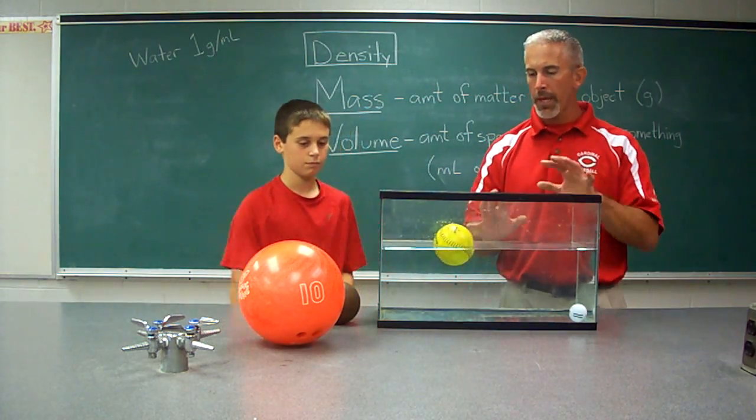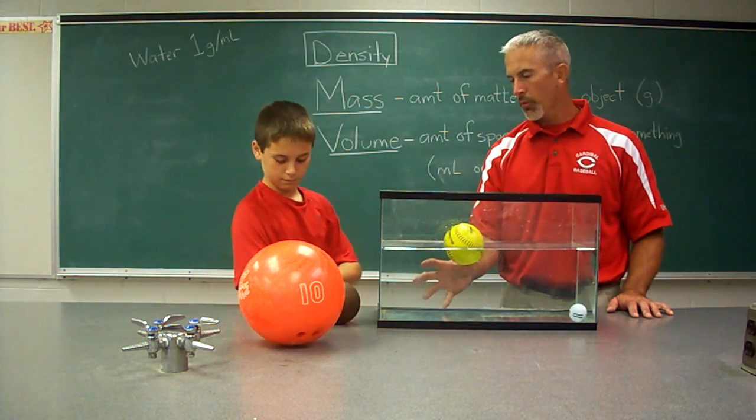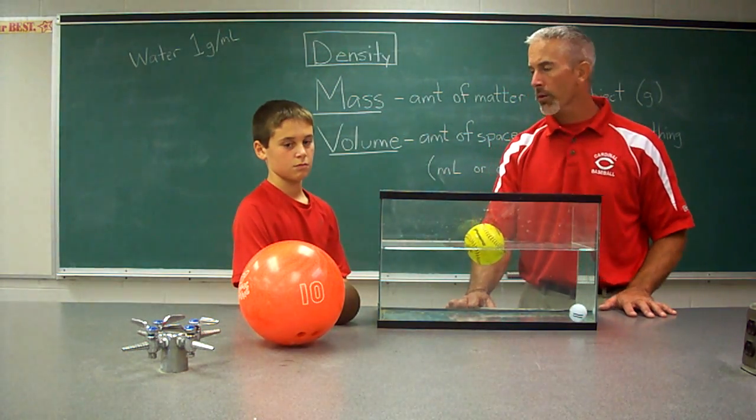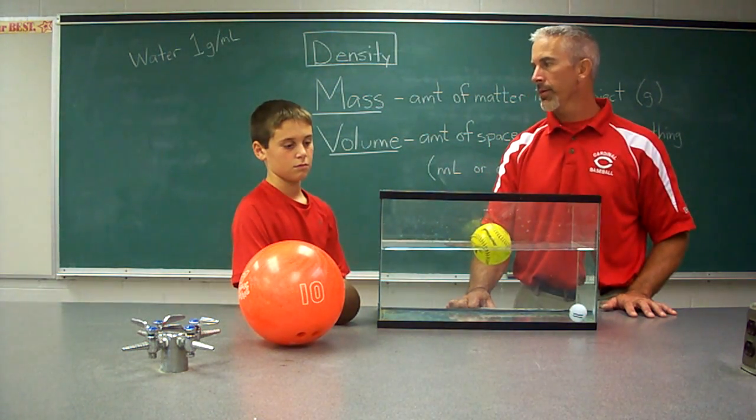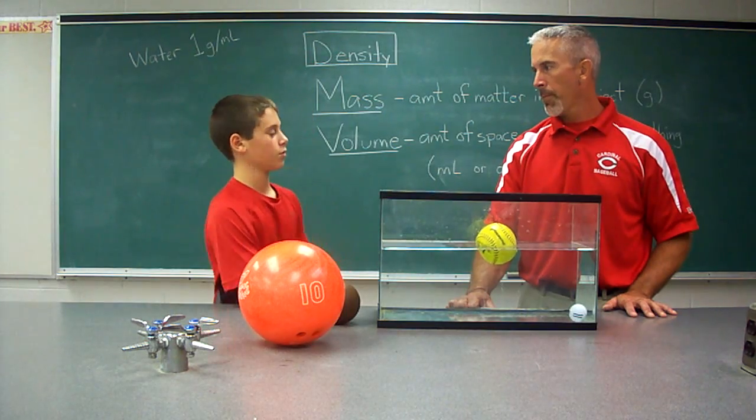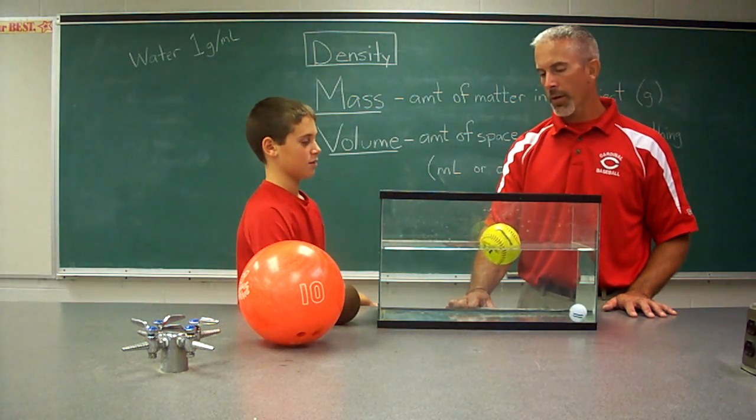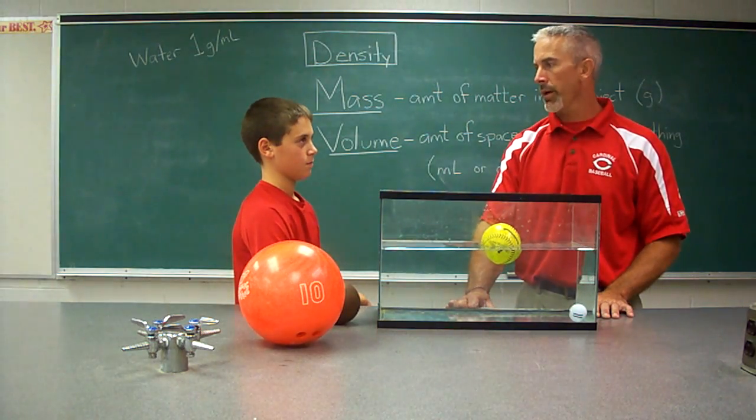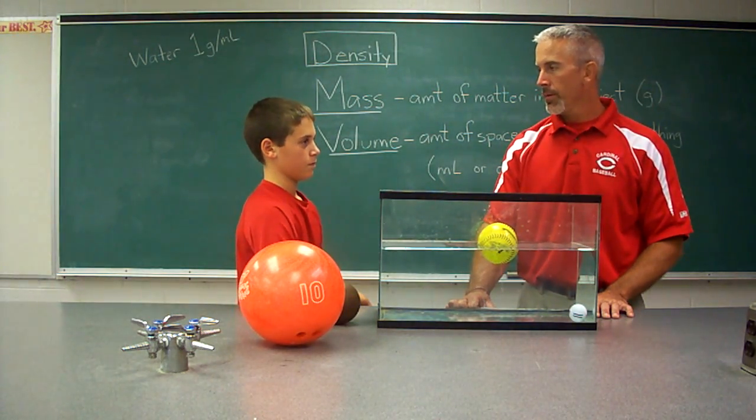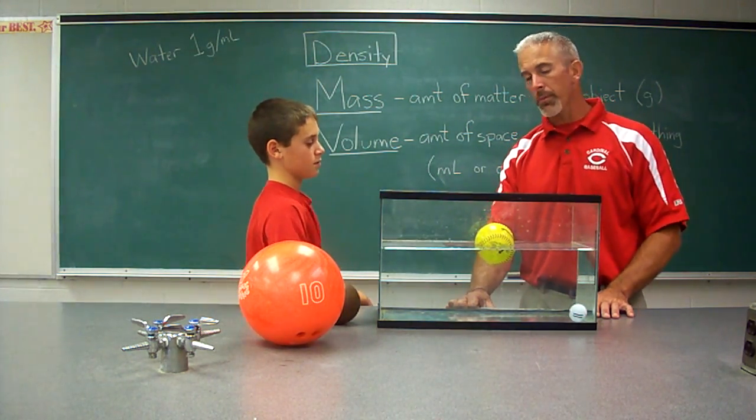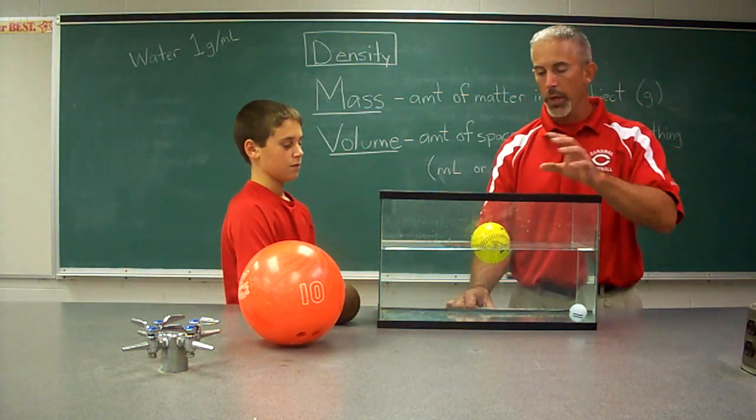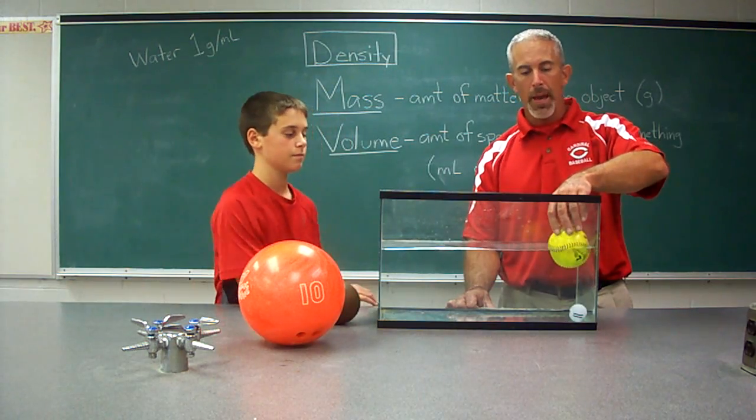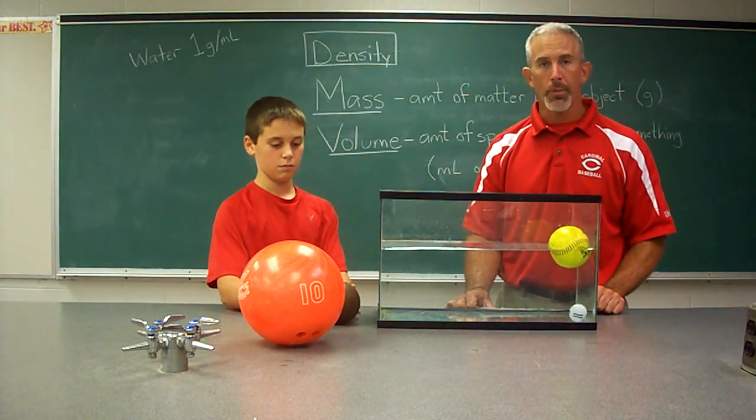So if I was to ask you without making any measurements, knowing the density of water is one gram per milliliter, would you think that the density of that softball is greater or less than one gram per milliliter? Less, because it is floating. It would probably be less than one gram per milliliter. And we could figure that out mathematically by determining the mass and volume and calculating the density.